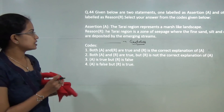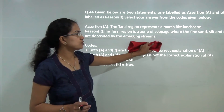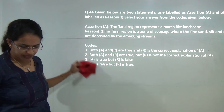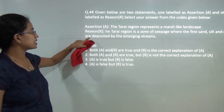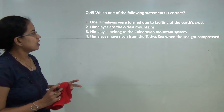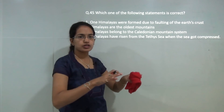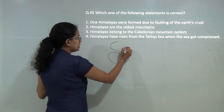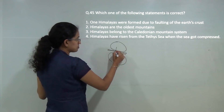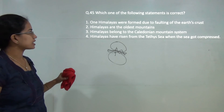The Tarai region represents a marsh-like land because it is a zone of seepage where fine sand, silt and clay are deposited by emerging streams. Both the statements are correct and the reason correctly explains the assertion. Next, the Himalayas have risen from the Tethys Sea which got compressed between Gondwana land and Angara land. This compression finally led to the formation of the present day Himalayas, so option 4 is the correct answer.